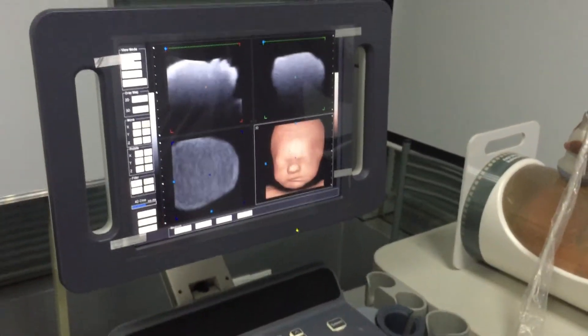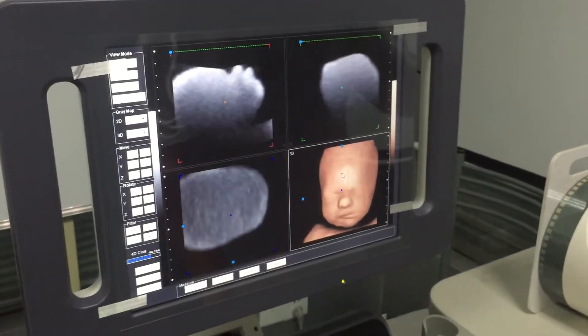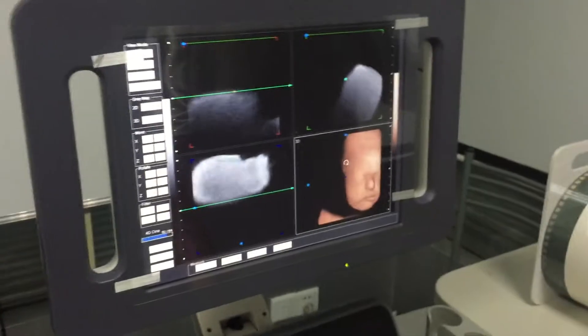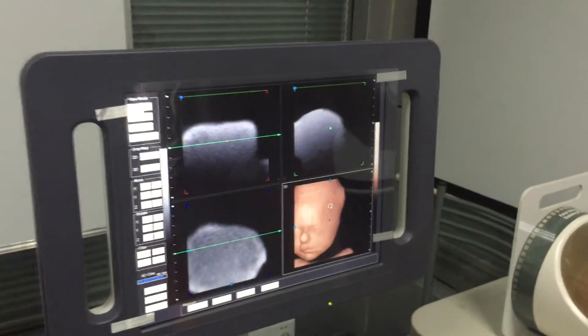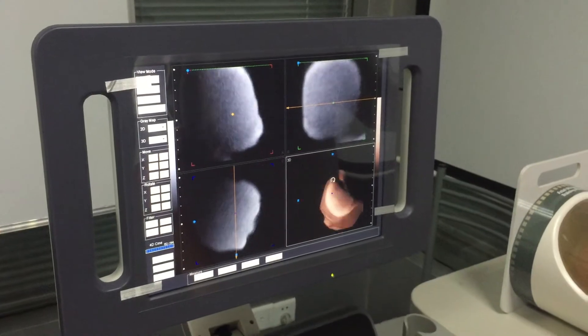After that, you can change the two buttons to adjust the direction of the 4D image from right to left and from up to down.